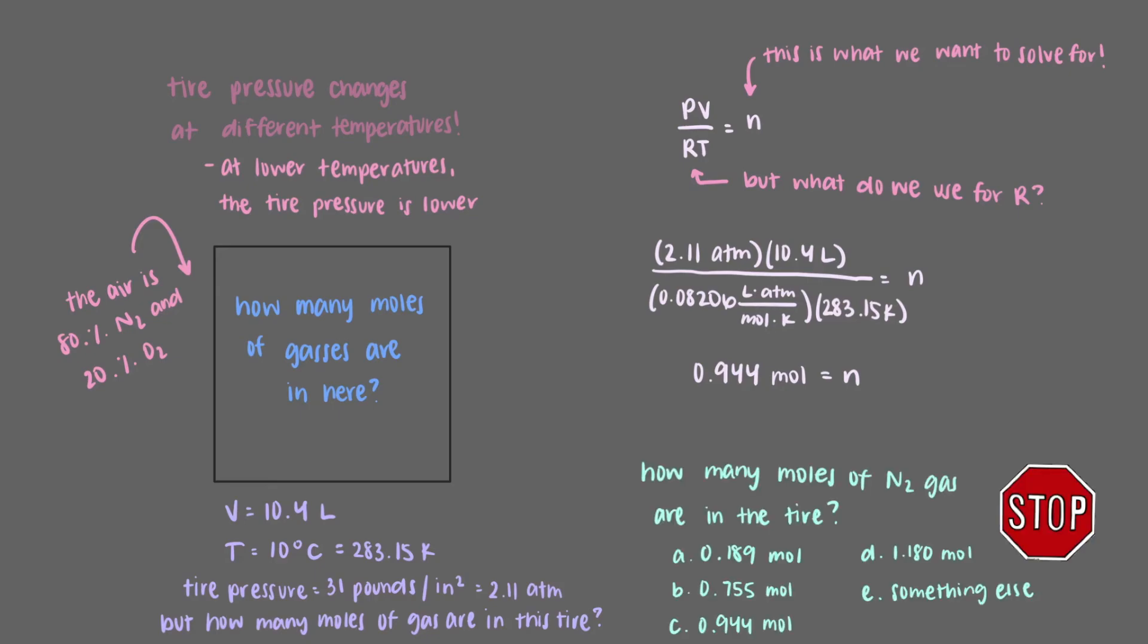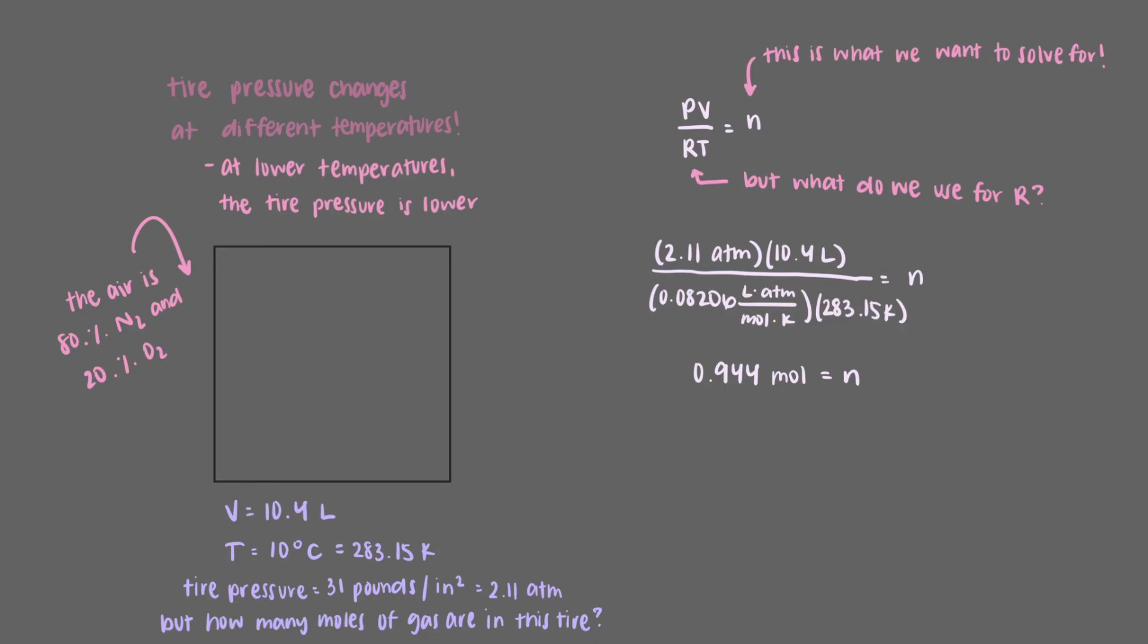How many moles of nitrogen gas are in the tire? Nitrogen and oxygen are both ideal gases, so they contribute the same to the pressure. So 80% of 0.944 moles means that there are 0.755 moles of nitrogen gas in the tires. That leaves 0.189 moles of oxygen gas too.